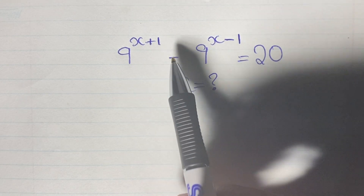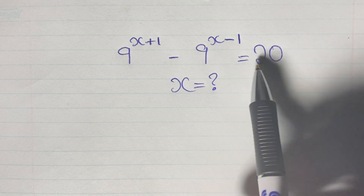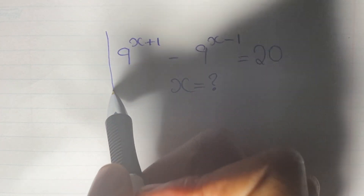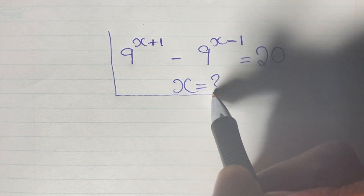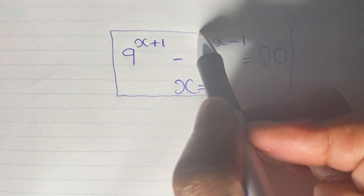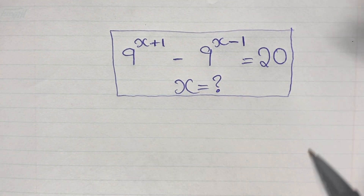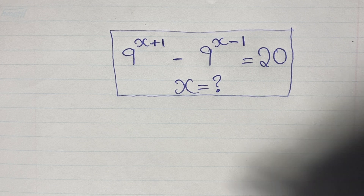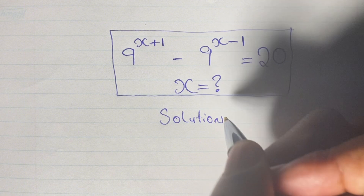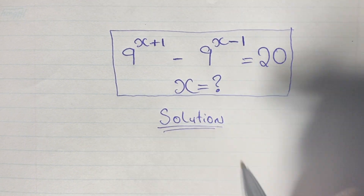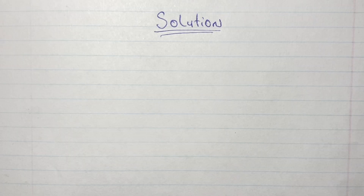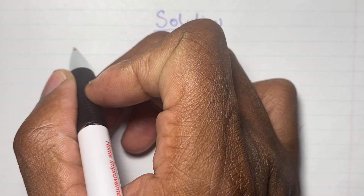Greetings again everyone, welcome back to my channel. Here we have another algebraic exponential equation that we are going to solve. We have 9 to the power of x plus 1, minus 9 to the power of x minus 1, is equal to 20, and we are given to find the value of x. You can pause this video and try it on your own, or let us go ahead and do this one together. I'll write my solutions down below. Check out my playlist to see how we simplify and solve other algebraic exponential equations.